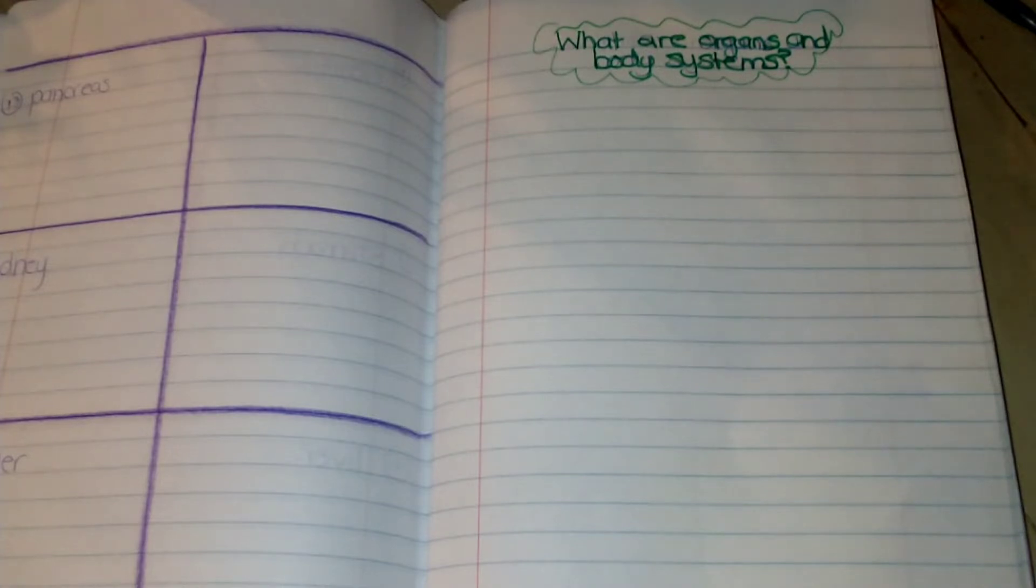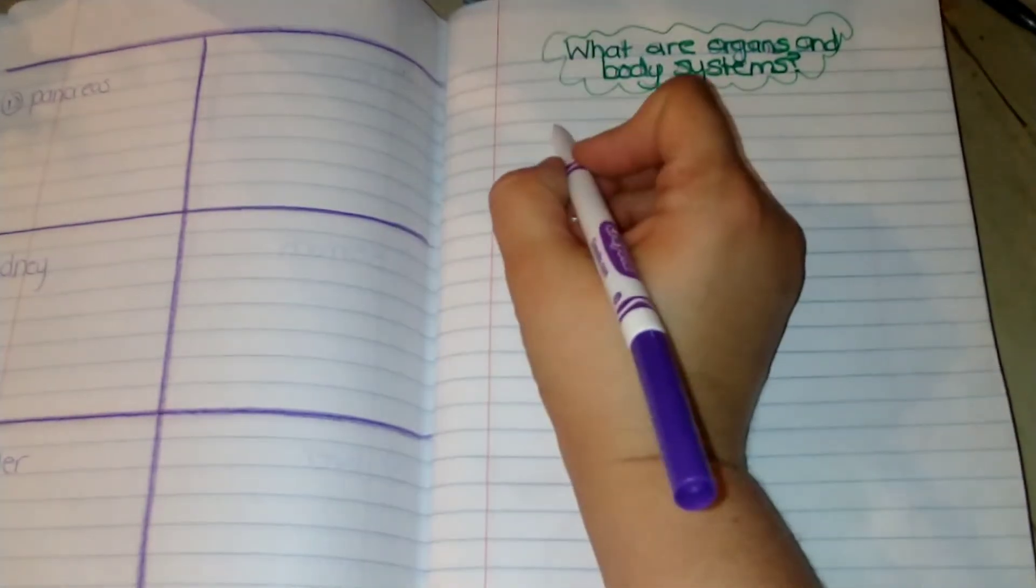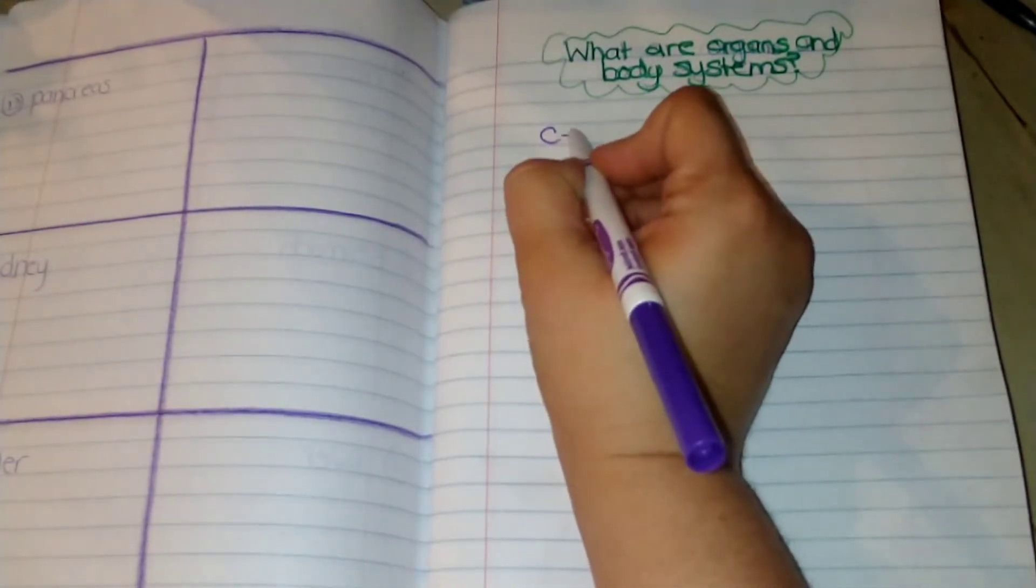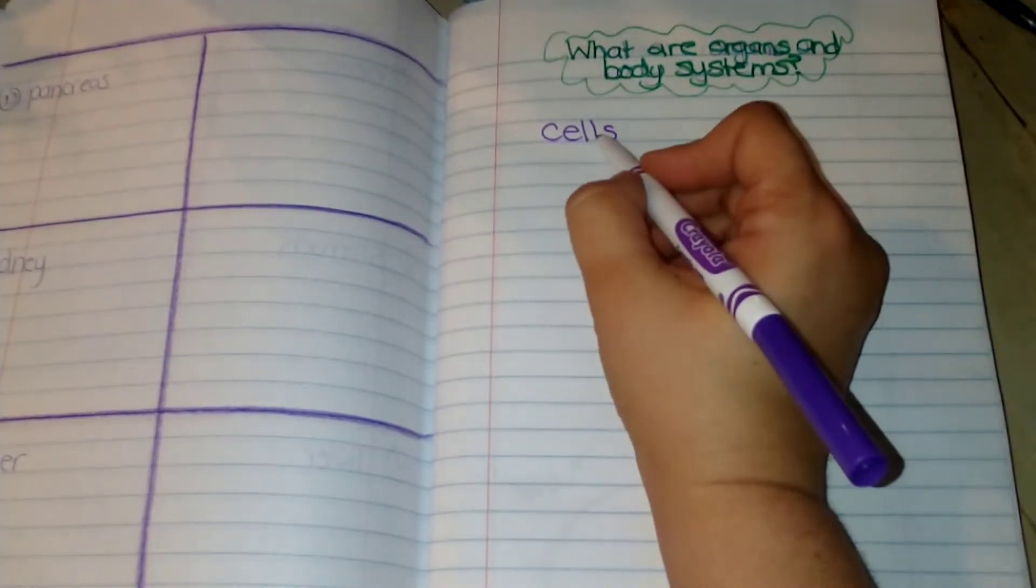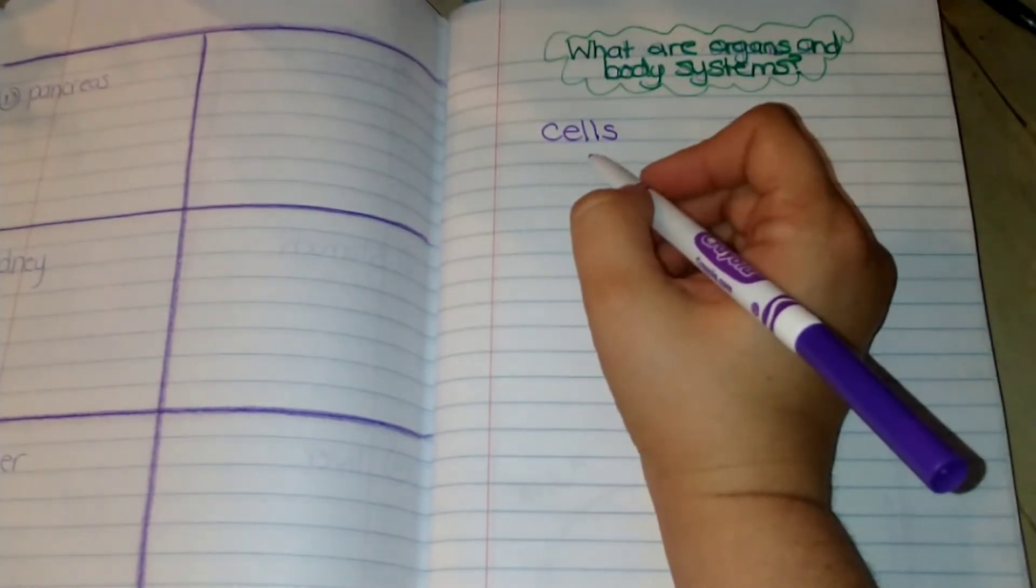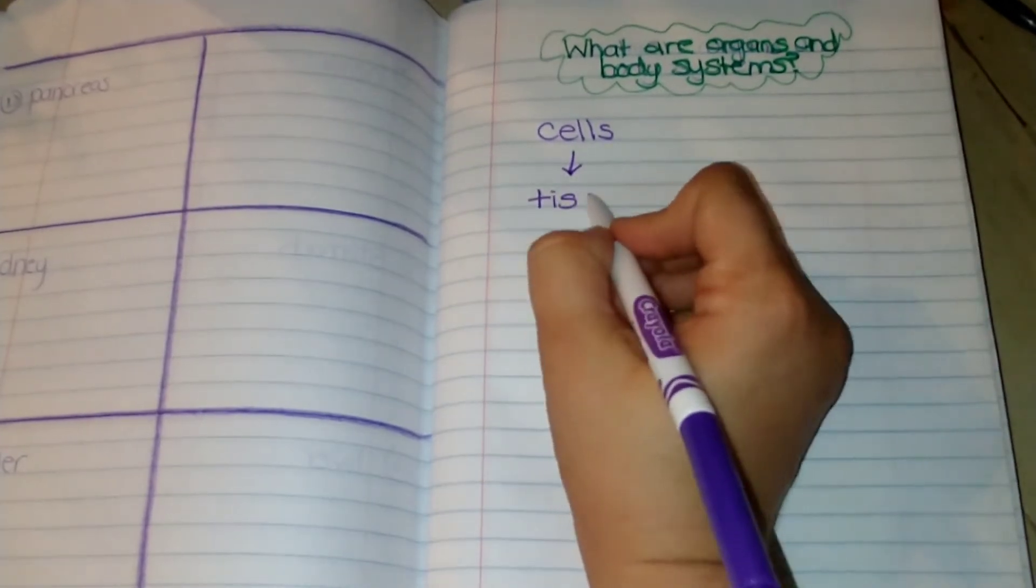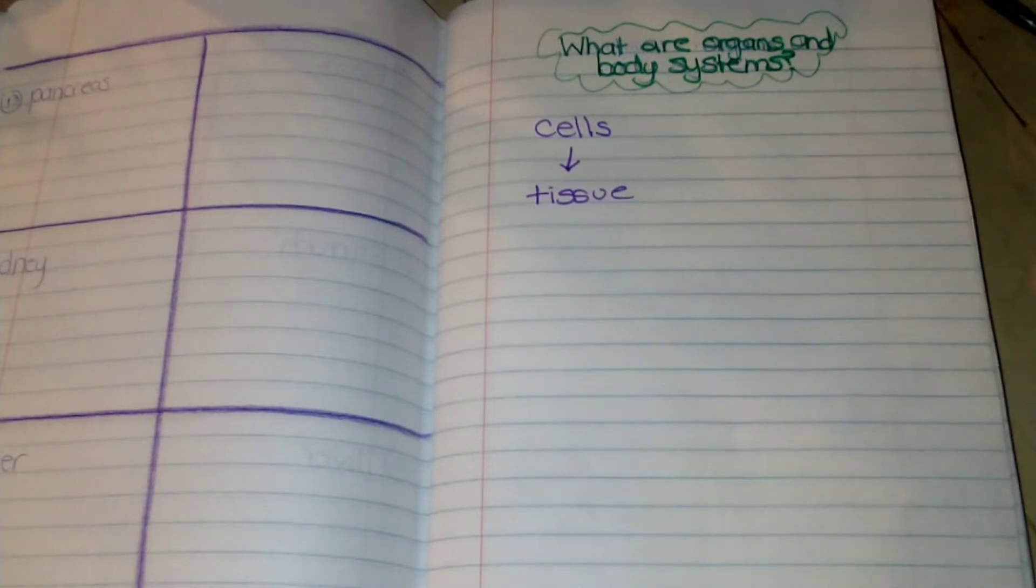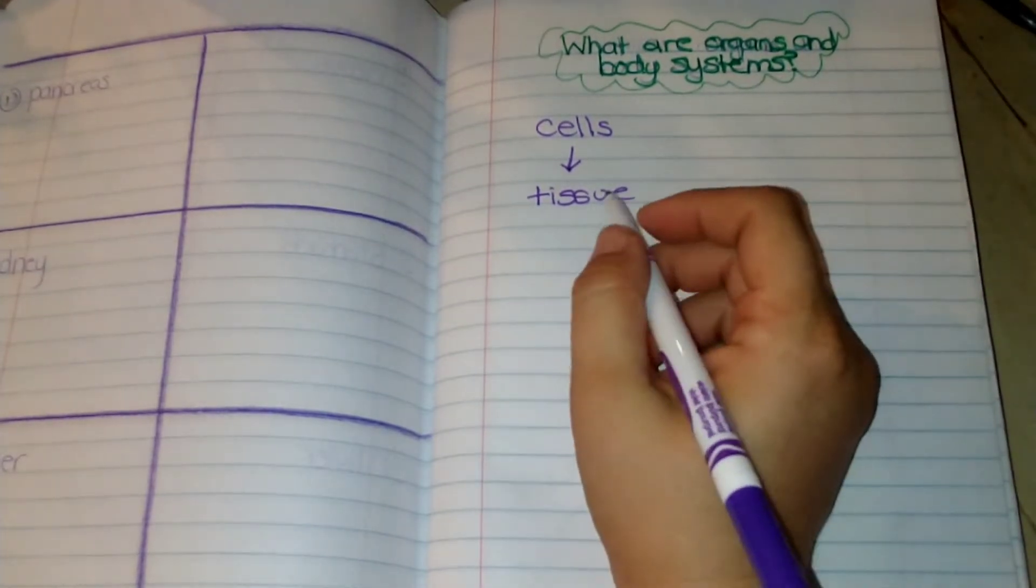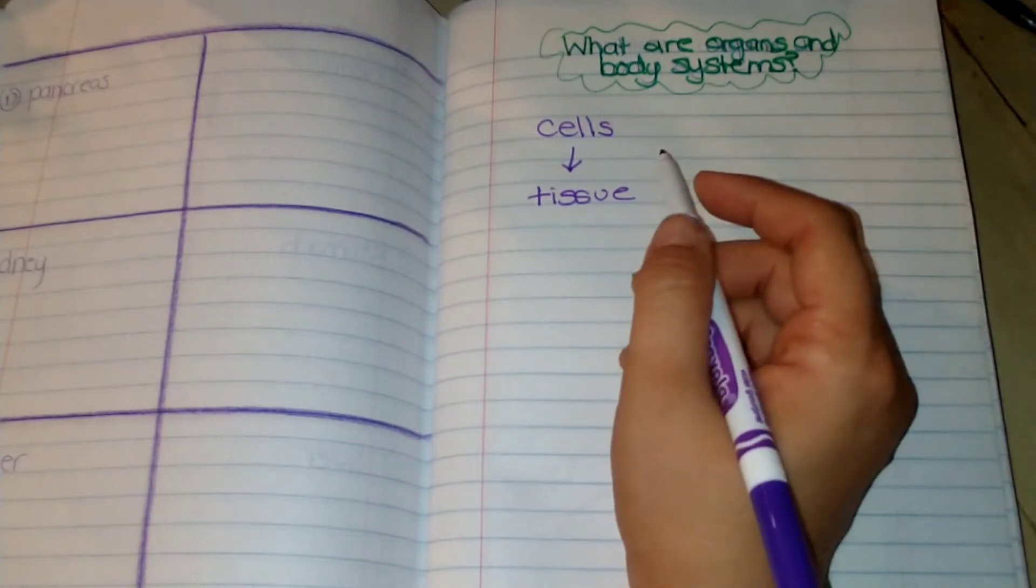So first we have to see how organs are made up. The first thing that we want to talk about are cells. Cells are the tiniest piece of an organism that make up tissue. Not the tissue that you need when you sneeze—ah-choo! Tissue as in tissue in your body. Your body parts are made out of tissue.